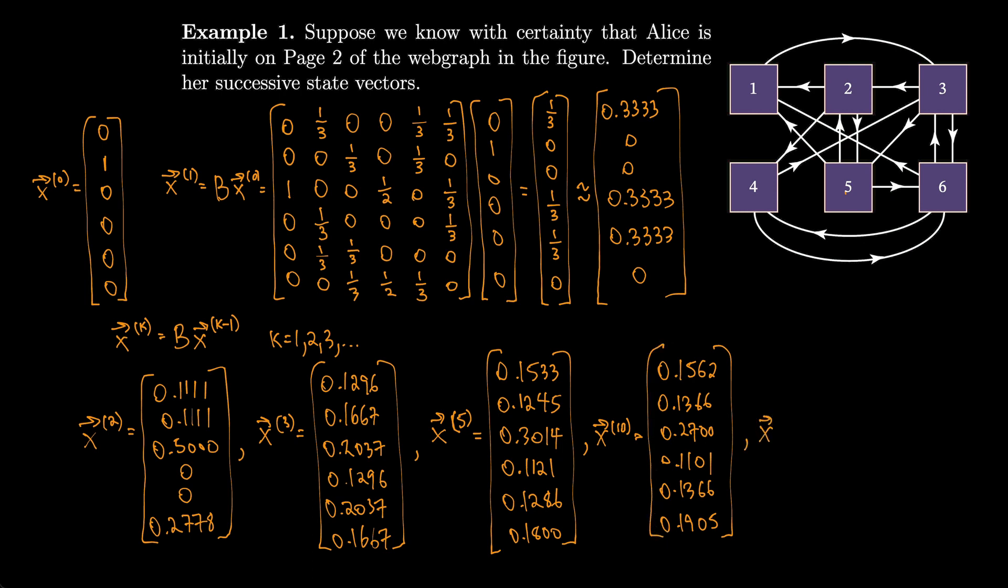And again, another five times to get x15, which is 0.1544, 0.1365, 0.2727, 0.1090, 0.1365, 0.1910.